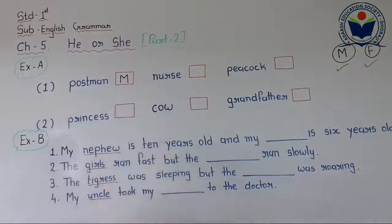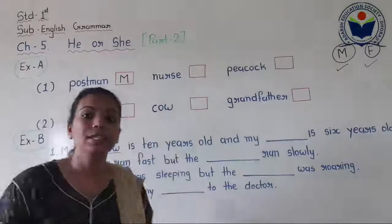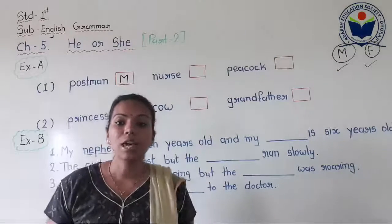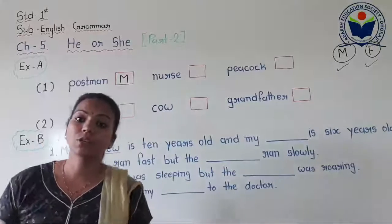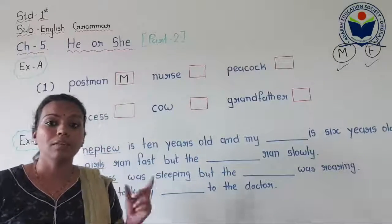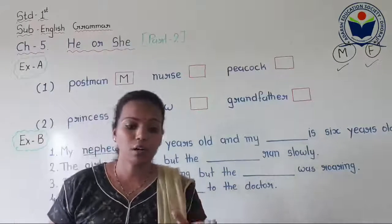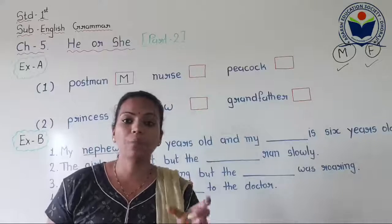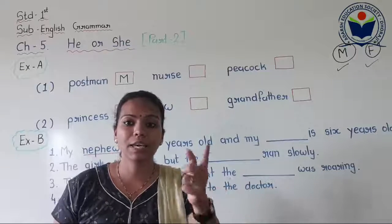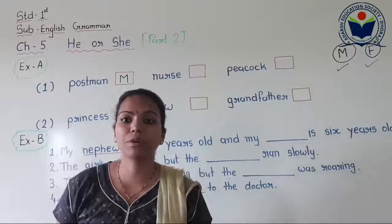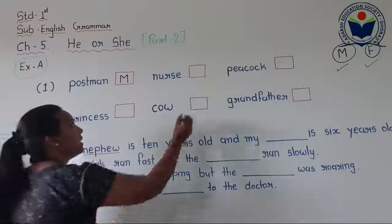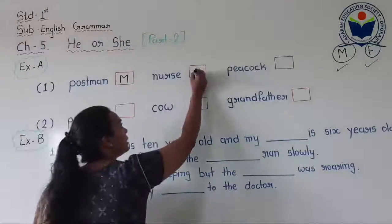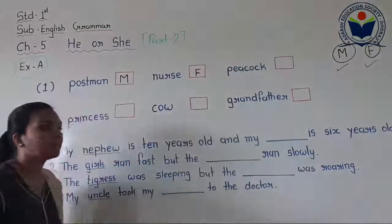You can say postman is the naming word for male. So we will write capital M here. Now please take your pencil and write capital M in the box. Next, the second naming word is nurse — N-U-R-S-E. Can you tell me? The naming word nurse — do we use it for male or female?